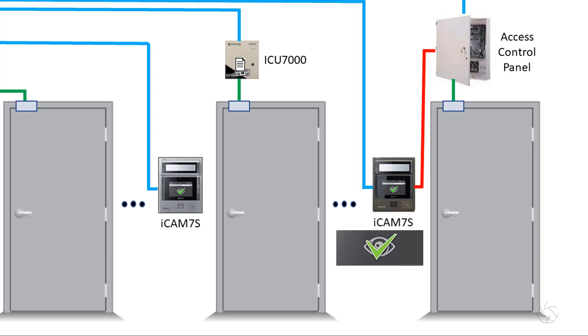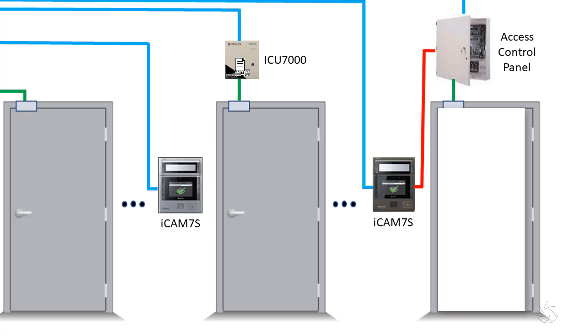If matched, the iCam will grant the user access by outputting the user's stored card data via Wiegand to the access control system, or by triggering the relay of the iCam.